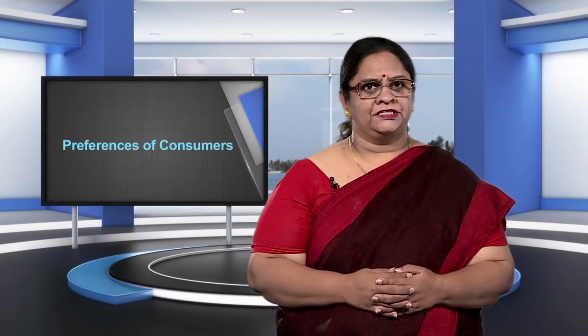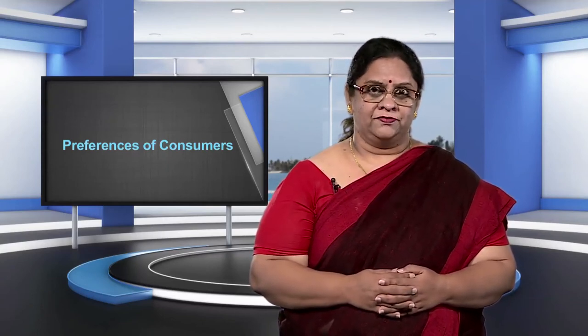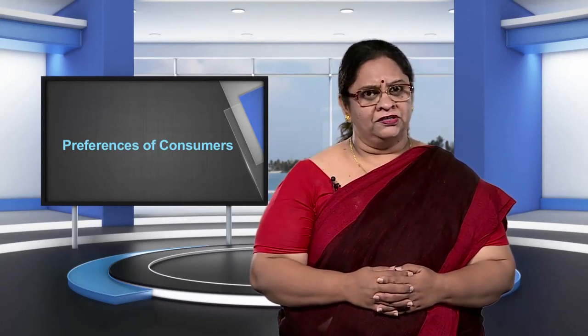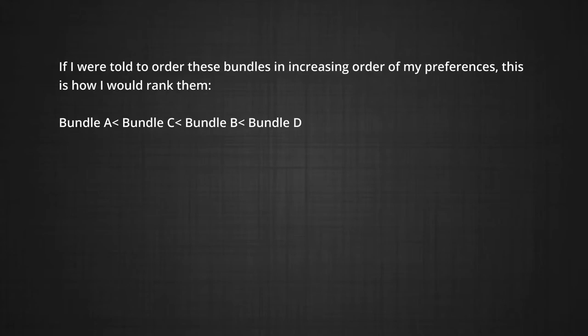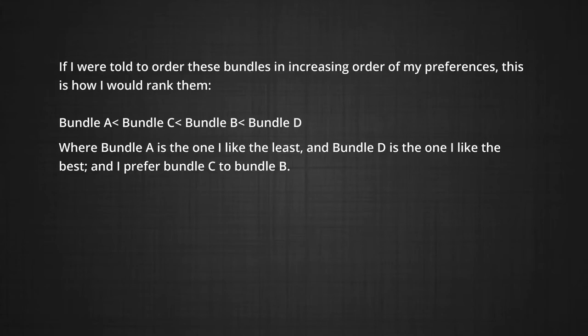How would I compare bundle B and bundle C? Bundle C has more movies but fewer books. These bundles are more difficult to rank outright. If I like books more than movies, I will prefer bundle B to bundle C. If I prefer movies more, then I may prefer bundle C to bundle B. If I were told to order these bundles in increasing order of preference, here is one ranking: bundle A < bundle C < bundle B < bundle D. In other words, I like bundle A the least and bundle D the best, and I prefer bundle C to bundle B.